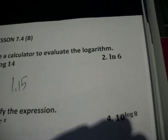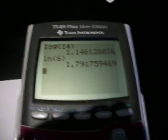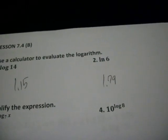But here we have LN 6, which means we're going to use this button. LN 6. We'll say 1.8. Or I guess to keep them the same, we'll say 1.79.